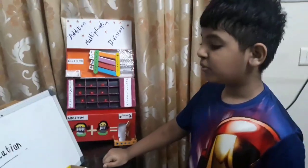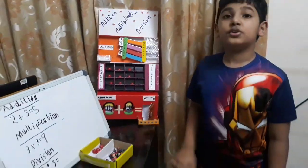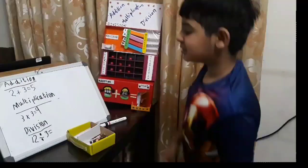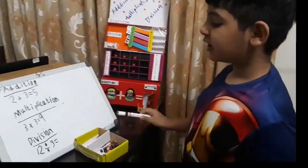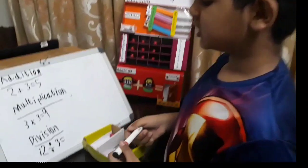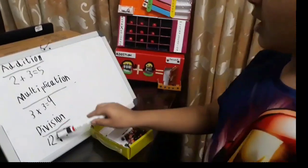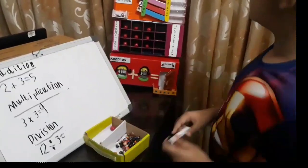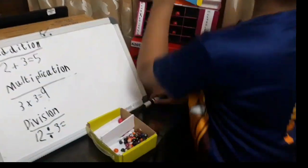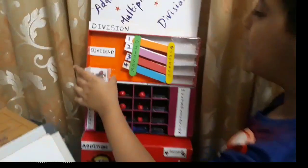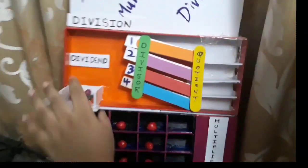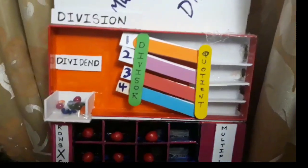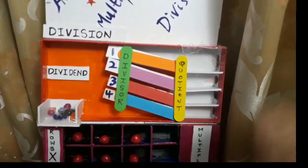Now moving on to division. We are going to do the question 12 divided by 3. So my 12 is the dividend. I will divide it by 3.